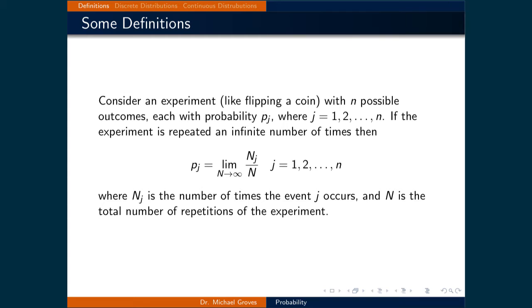The limit means that to get a true probability, we would need an infinitely large sample. For instance, flip a coin 10 times — if it's a fair coin, you should land on heads 5 times and tails the other 5. However, with a sample of only 10, that may not happen, and you may not conclude it's a fair coin. If you increase the number of flips to 100, 1000, 10,000 and so on, and if the coin is fair, you will get closer and closer to a 50-50 split. That's what the limit represents: sampling an infinite number of events gives you the actual probability.